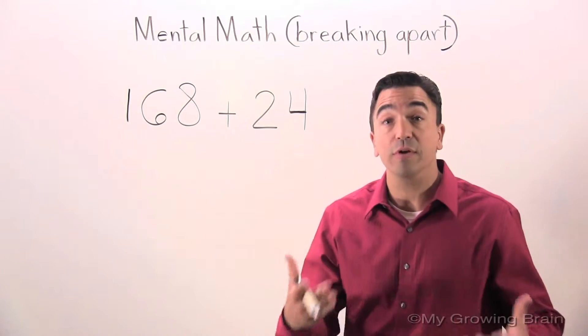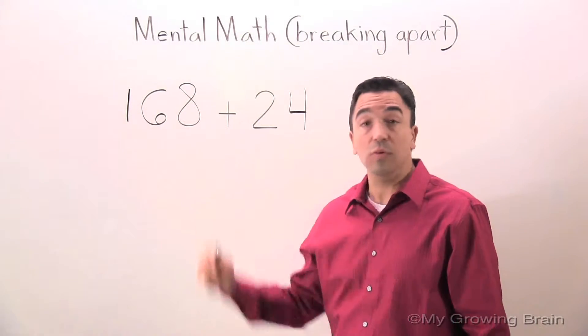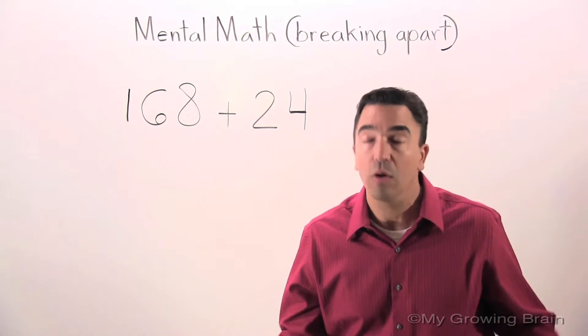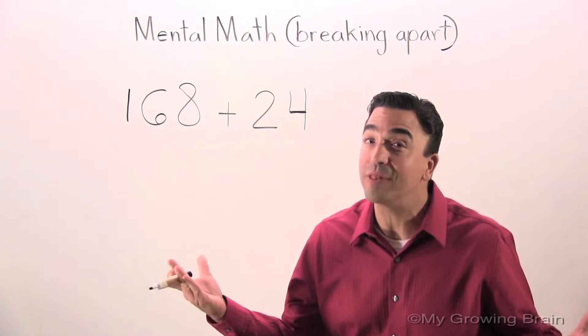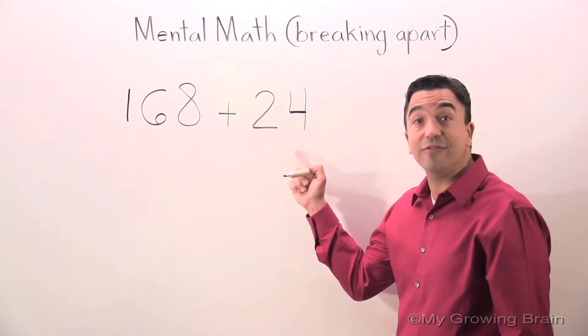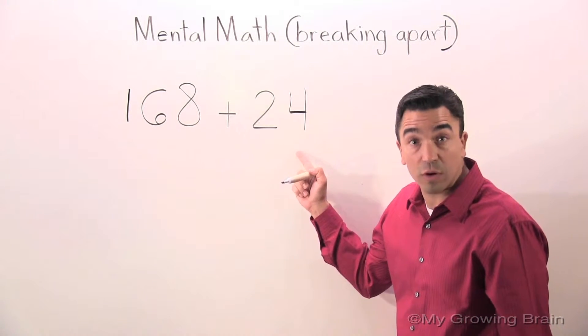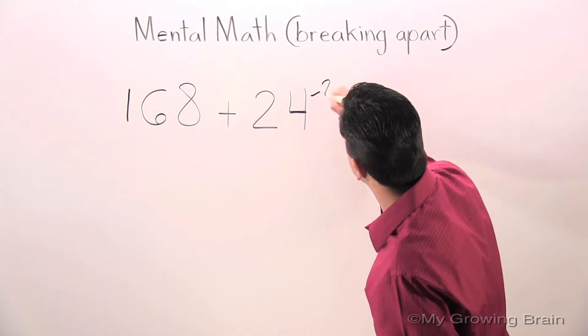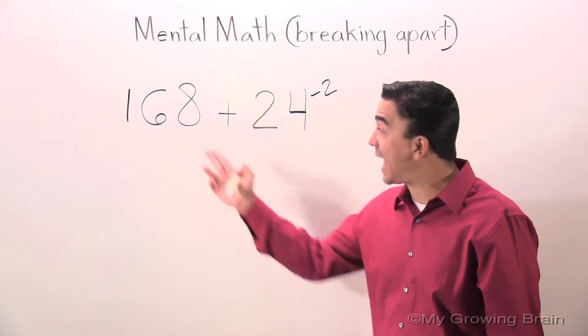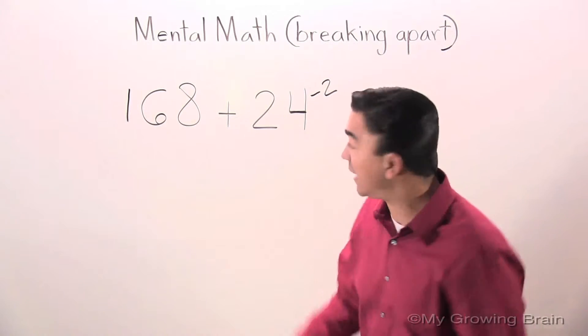Now for me to be able to do that, I have to add 2 to 168. Where am I going to get that? Well, remember we're doing the breaking apart strategy. Let's take away 2 from the 24. And the 2 we took away from the 24, we're going to add that to the 168.